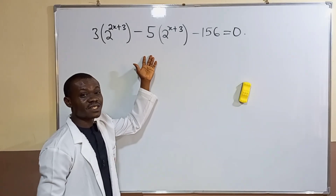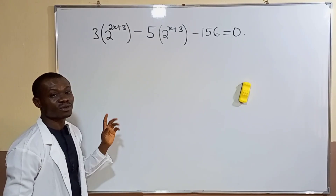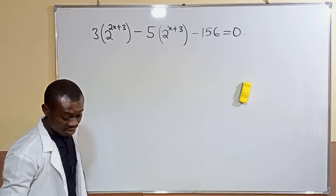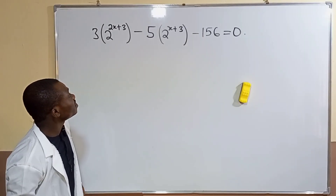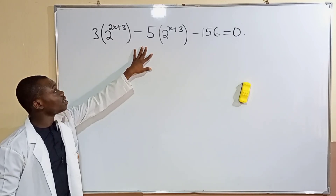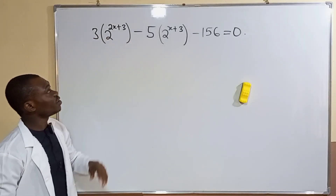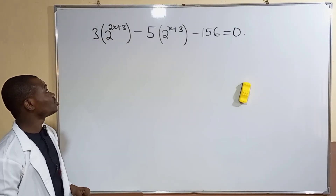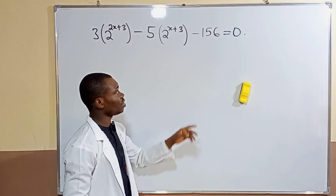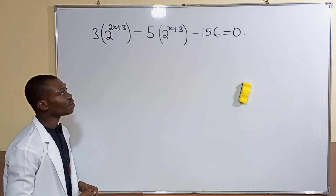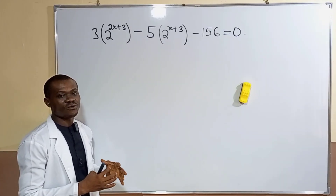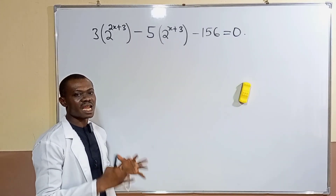In this video we want to look at the solution to this exponential equation. We have to find the value of x by solving the equation: 3 times 2 to the power of (2x + 3) minus 5 times 2 to the power of (x + 3) minus 156 equals zero.